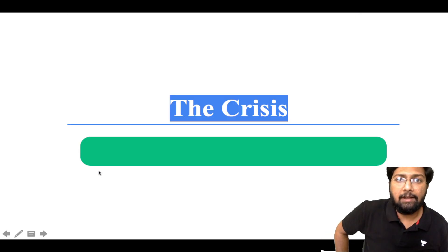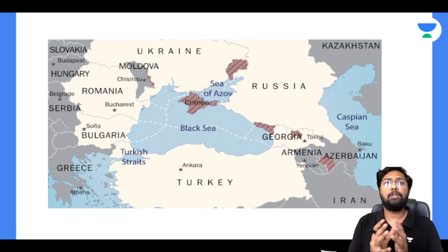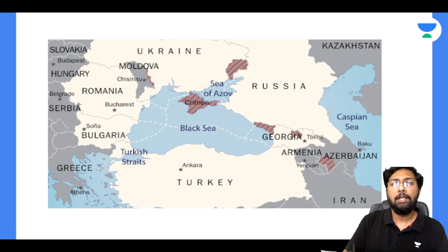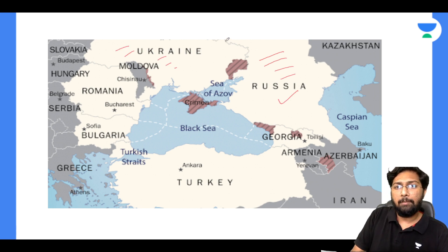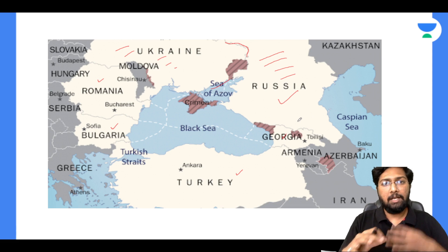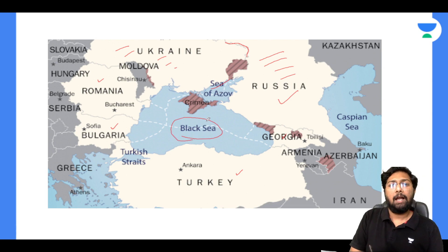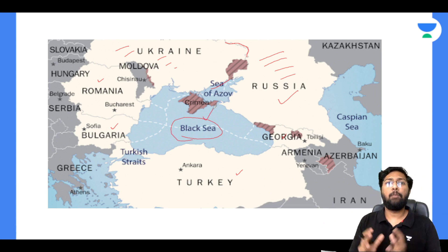Now let's talk about the crisis. To understand any geopolitical situation, we should look at the map and the neighboring countries. If we look at the whole dispute, we are looking at Russia and Ukraine — two countries that share their borders. Other neighboring countries include Turkey, Bulgaria, Romania, Georgia, and Russia. If you look at the Black Sea, the sea route is very important for any country in terms of trade routes.